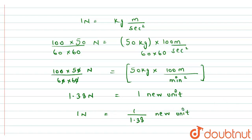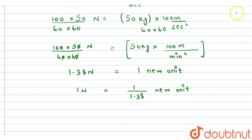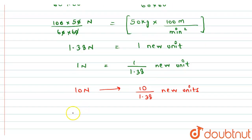See, I don't know the name of the unit, or neither it is mentioned in the question, so I have just taken a random name, that is new unit. And now, we have to calculate for 10 Newtons, so multiplying both side by 10 Newtons, so we will get, for 10 Newtons, we will have here, 10 over 1.38 New units.